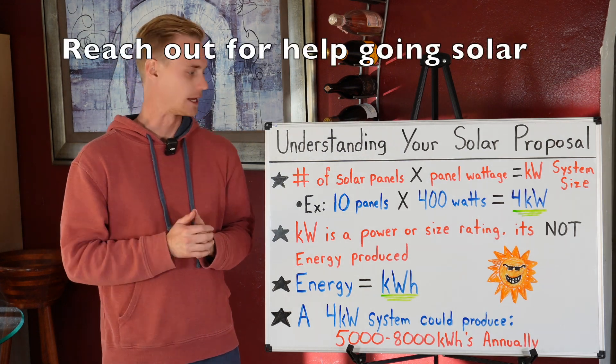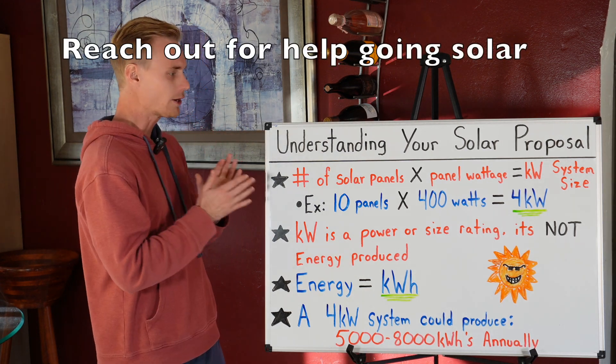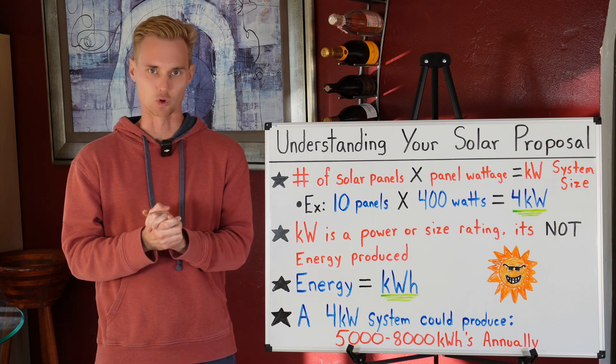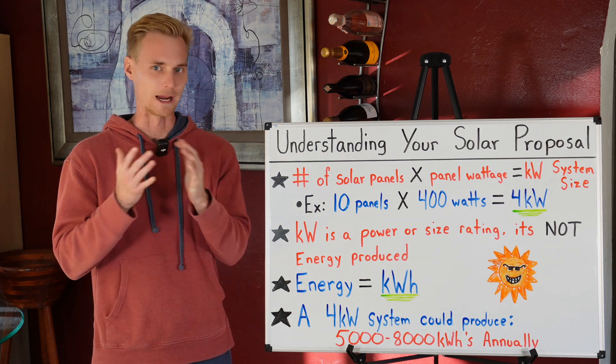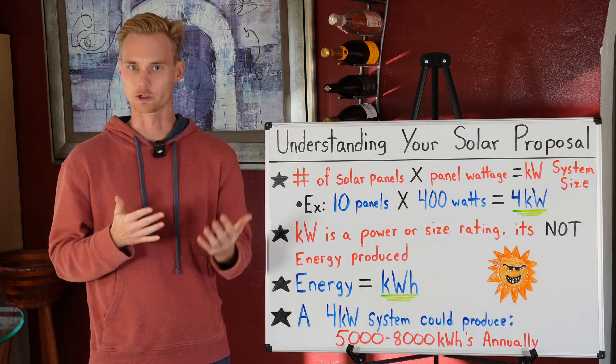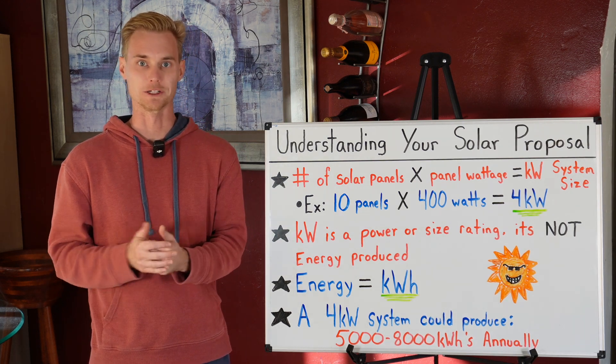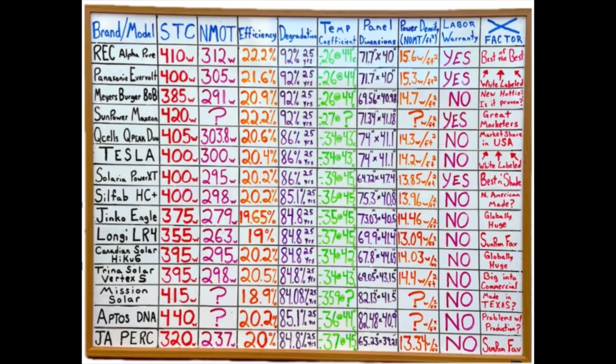The first thing is the wattage of the solar panel. Right now these are generally somewhere in the range of the high 300s up into the 400s, and in very few cases for some commercial panels that are bigger, they get up into the 500 and 600 watt range.